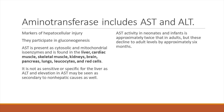AST is a cytosolic and mitochondrial isoenzyme and apart from liver, it is also found in cardiac muscle, kidney, brain, pancreas, lungs, leukocytes, and RBCs. These are the non-hepatic sites, so any disease involving either of those organs or tissues can increase the AST.